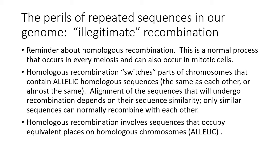This is not about regulation right now. What we need to talk about is the perils of repeated sequences in our genome. Remember what homologous recombination is — it's a normal process that occurs in meiosis and can also occur to some extent in mitotic cells. The point is that homologous recombination uses sequence similarity between two DNA molecules to actually exchange parts of chromosomes or genes with each other. Normally this involves allelic sequences — DNA sequences that occur at equivalent locations on equivalent chromosomes.